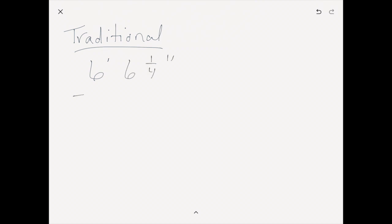Let's start with the traditional algorithm. She has six feet, six and a fourth inches, and they need to take away two feet, ten and a half inches. Right off the bat, when kids look at this, they say, well, I don't have enough — hopefully they know that a half is bigger than a fourth. When they come over here to regroup, often what we see kids do is they will make that a five — they know that goes down, but they think, well, I just add one here.